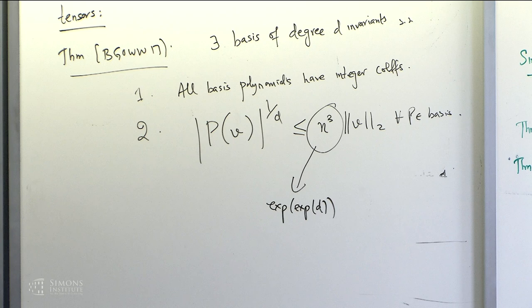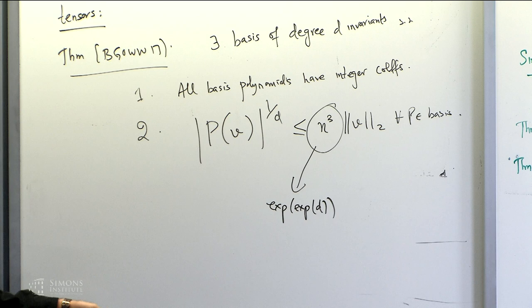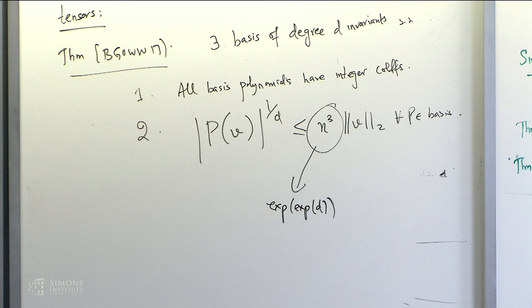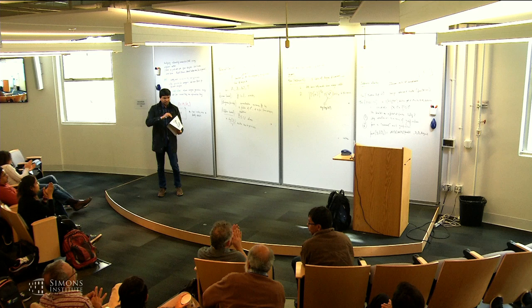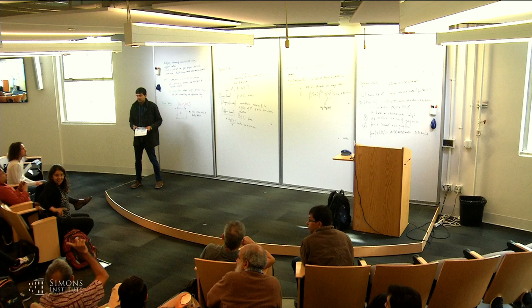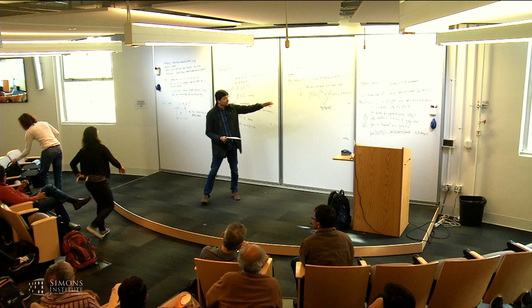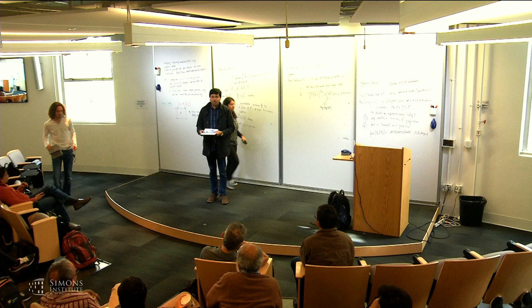Can we write down any of these invariants explicitly? In the matrix and operator scaling cases, yes, but in the tensor case, not cleanly — it's a messy expression. We know the structure involves permutations, but we don't have a clean explicit form. Regarding the log(1/epsilon) bound: in matrix scaling and operator scaling there are algorithms achieving log(1/epsilon), but in the tensor case we don't have that yet.